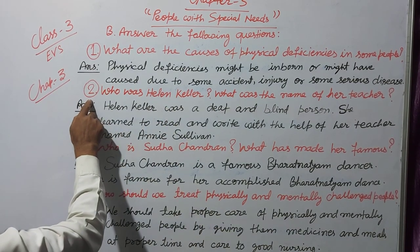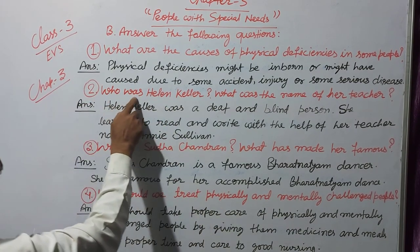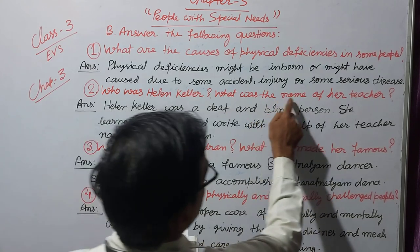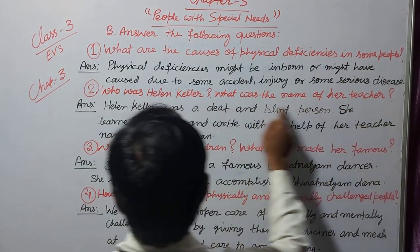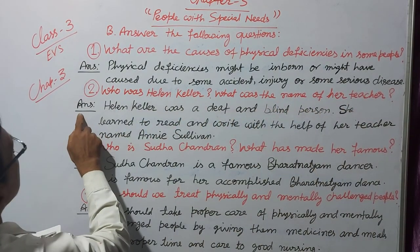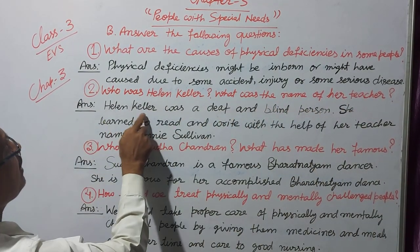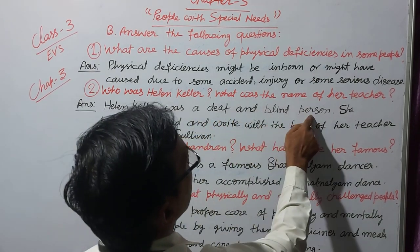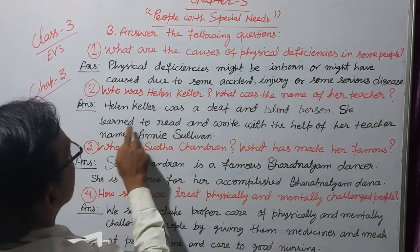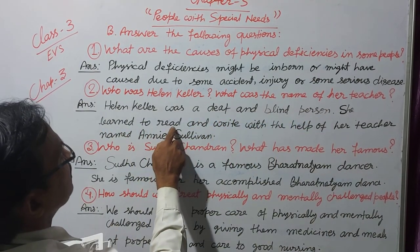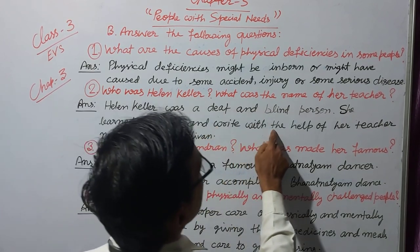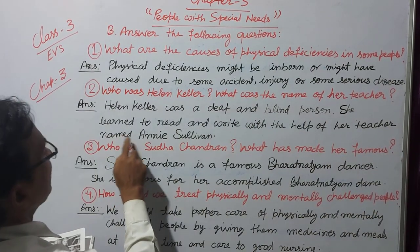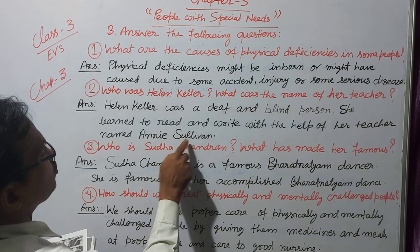Question number 2: Who was Helen Keller? What was the name of her teacher? Answer: Helen Keller was a deaf and blind person. She learned to read and write with the help of her teacher named Annie Sullivan.